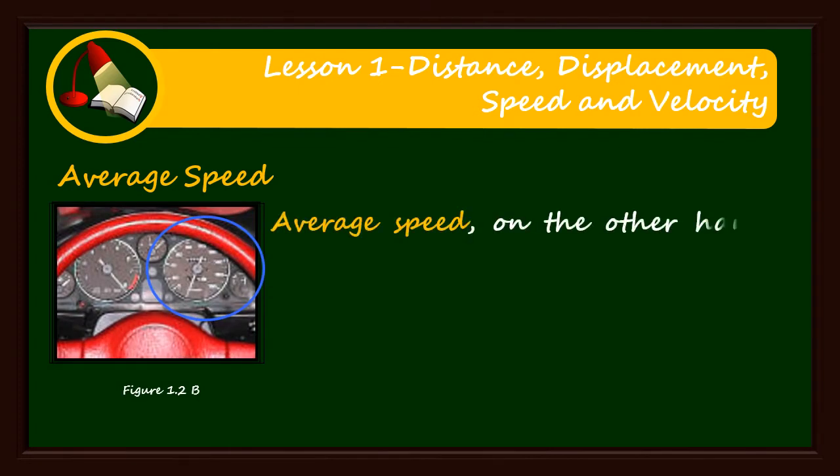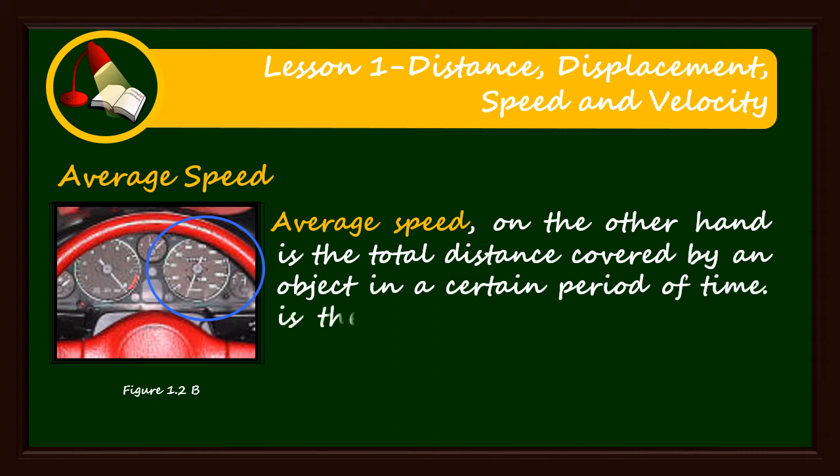Average speed, on the other hand, is the total distance covered by an object in a certain period of time. It is the representative speed of the whole course of travel.